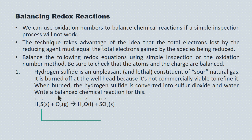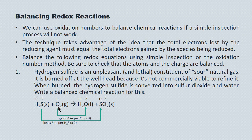The sulfur is going from minus two to plus four, so notionally it's losing six electrons for every H₂S molecule. The oxygen is going from zero to minus two, so for every O₂ molecule it's actually gaining four electrons. The number of electrons gained must be balanced with the number of electrons lost, so we use multipliers. We multiply the reduction by three and the oxidation by two, so that 12 electrons are gained in one half-reaction and 12 electrons are lost in the other.